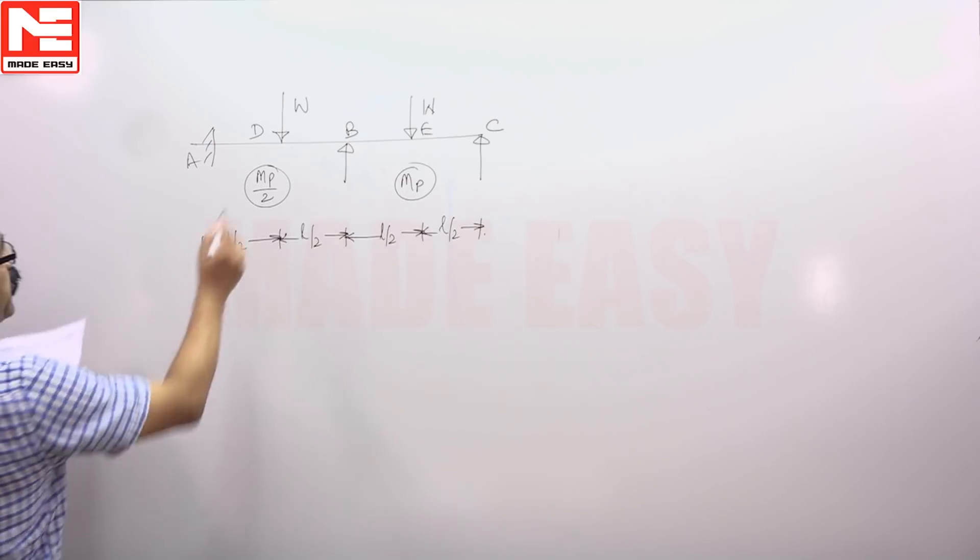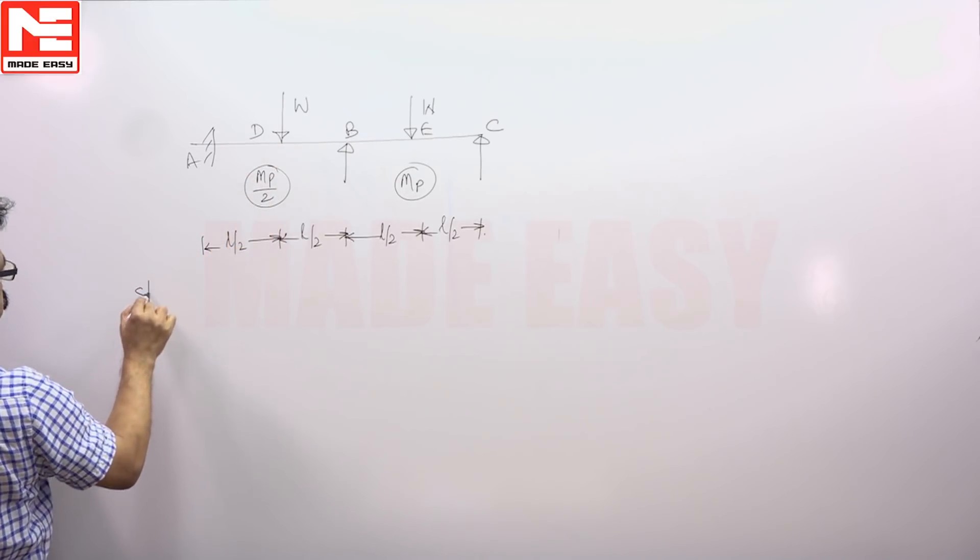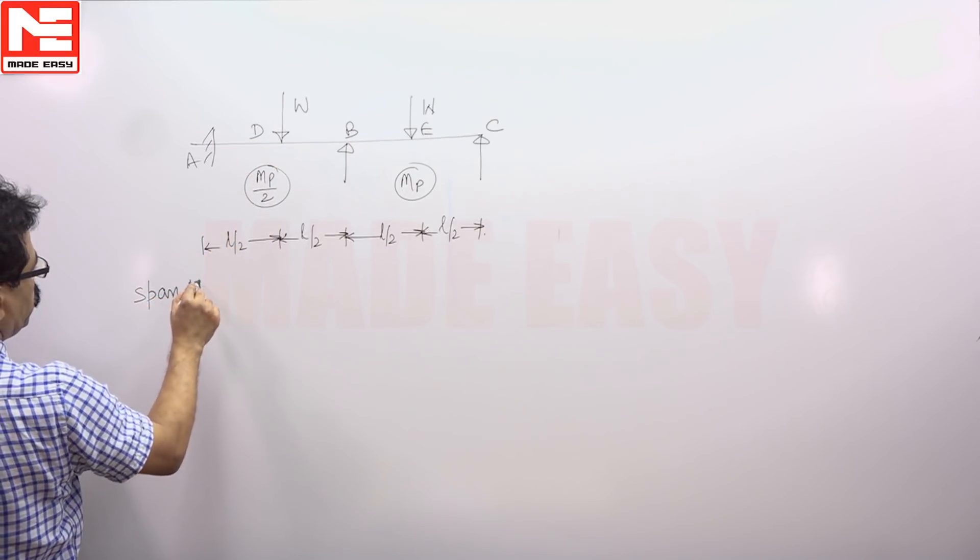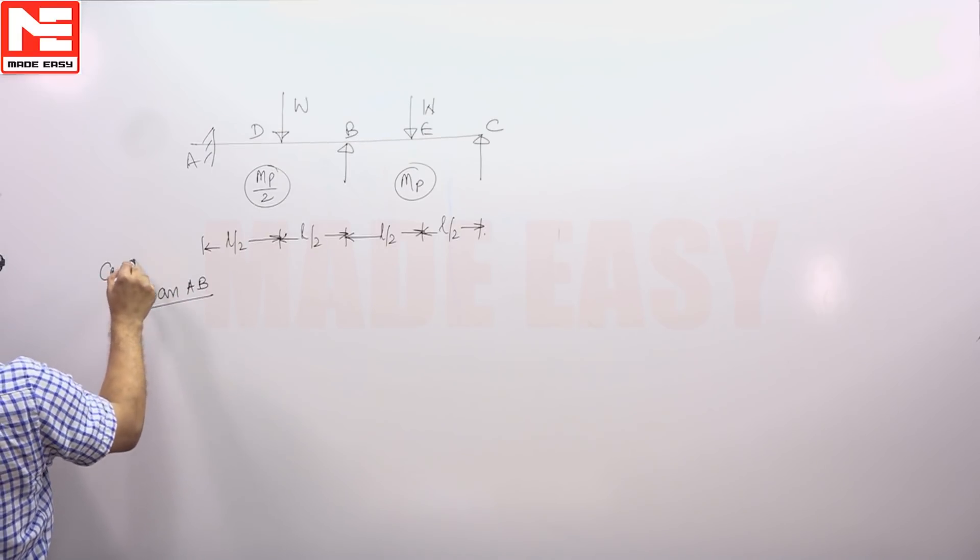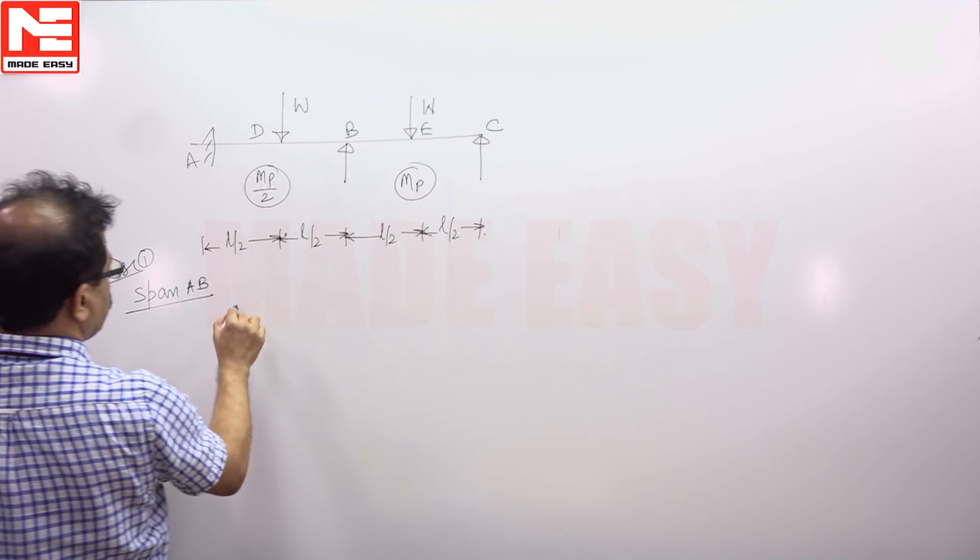So for the span AB you should take failure mechanism subjected to downward loading. So individual spans you will take it. Case 1 for the span AB.